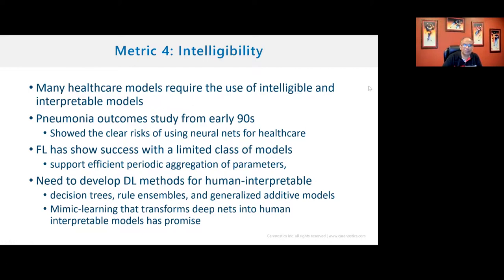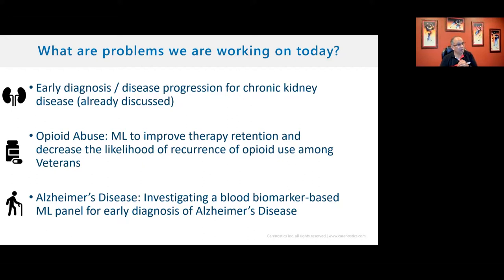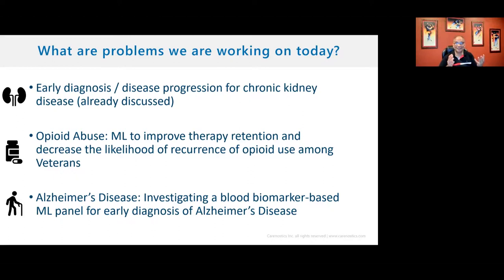With about five minutes left, let me briefly talk about the three problems my group — Cairnostics — is working on. We're doing early diagnosis and disease progression for chronic disease, looking not just at the general population but vulnerable subpopulations. I have access to data from three large medical centers with over 12 million patients who are interested in doing distributed learning with privacy parameters. Michael is working with me on this.